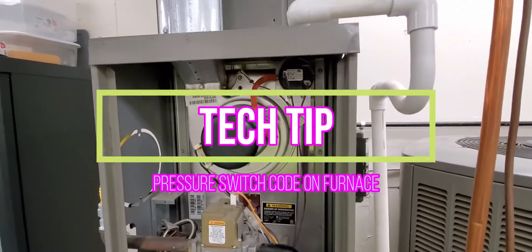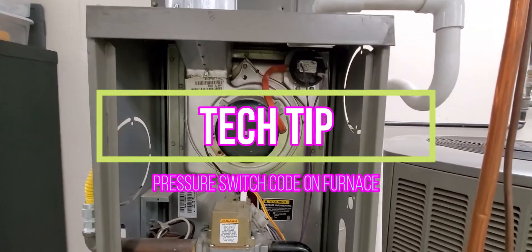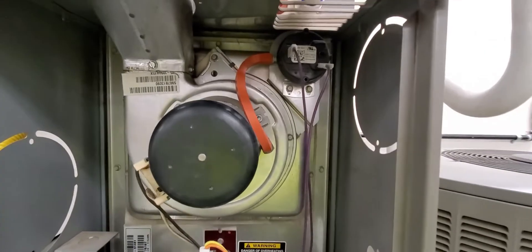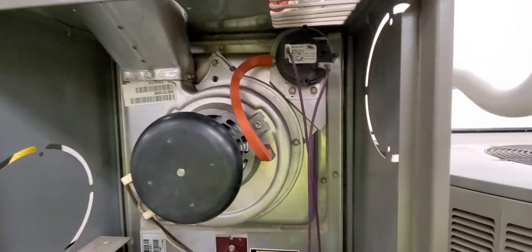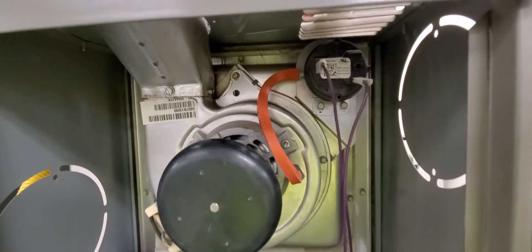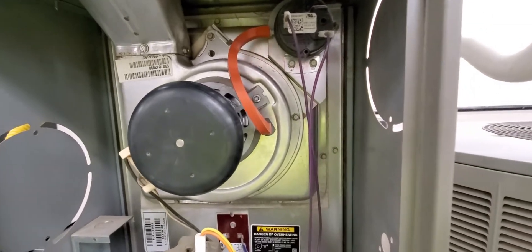A lot of times if you get a pressure switch error on your circuit board, I would check the hoses first and make sure that the ports aren't blocked. That's a pretty common problem in some of these. Take the hose off and then blow through it.